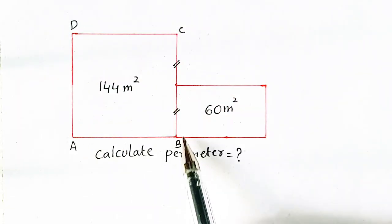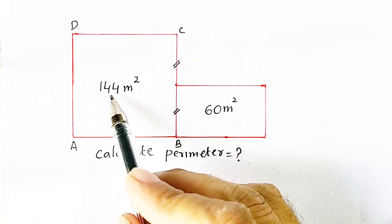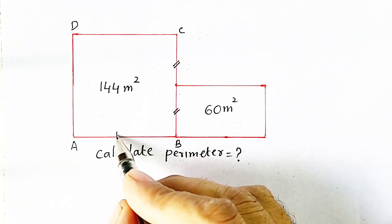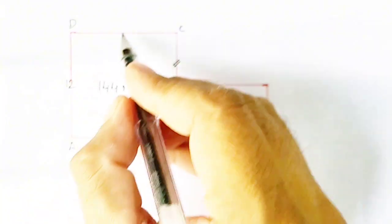Remember that ABCD is a square because it is 144 meter square. And this side will be equal to 12. This side will also be equal to 12.